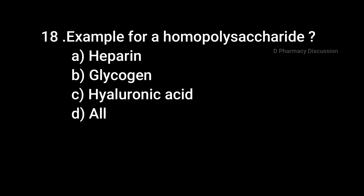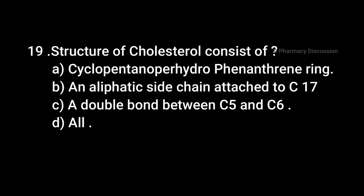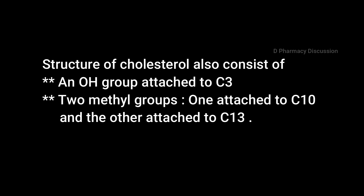Question 18: Example for a homopolysaccharide — Option A: Heparin, B: Glycogen, C: Hyaluronic Acid, D: All. Correct answer is Option B: Glycogen. Polysaccharides are classified into homopolysaccharides and heteropolysaccharides. Examples for homopolysaccharides are starch, glycogen, and cellulose; examples for heteropolysaccharides are heparin and hyaluronic acid. Question 19: Structure of cholesterol consists of — Option A: Cyclopentano-perhydrophenanthrene ring, B: An aliphatic side chain attached to C17, C: A double bond between C5 and C6, D: All. Correct answer is Option D: All. It also consists of an OH group attached to C3 and two methyl groups, one attached to C10 and the other to C13.